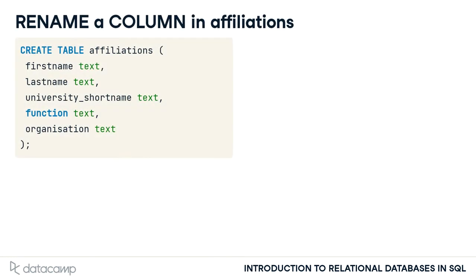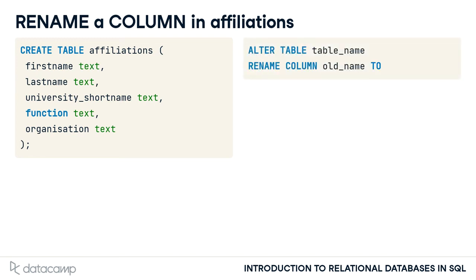Before you start migrating the table, you need to fix some stuff. In the last lesson, I created the affiliations table for you. Unfortunately, I made a mistake in this process. Can you spot it? The way the organization column is spelled is not consistent with the American style spelling of this table, using an S instead of a Z. In the first exercise after the video, you'll correct this with the known ALTER TABLE syntax. You do this with the RENAME COLUMN command by specifying the old column name first and then the new column name — that is RENAME COLUMN old_name TO new_name.